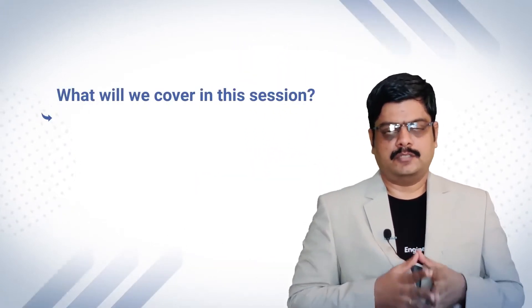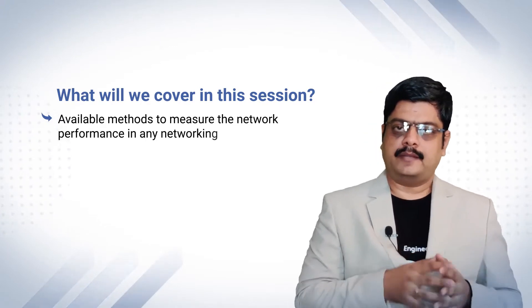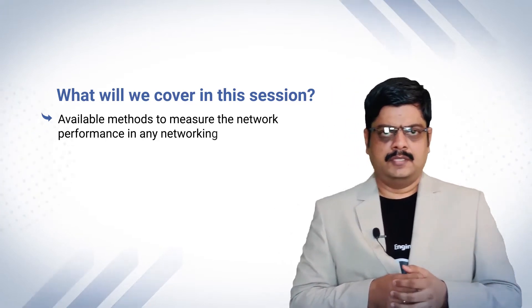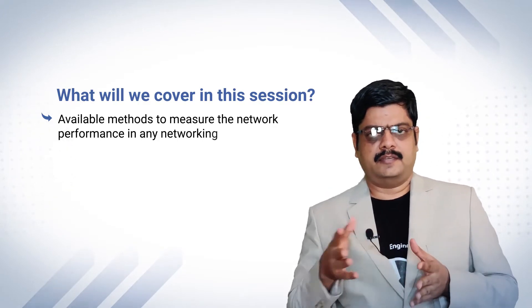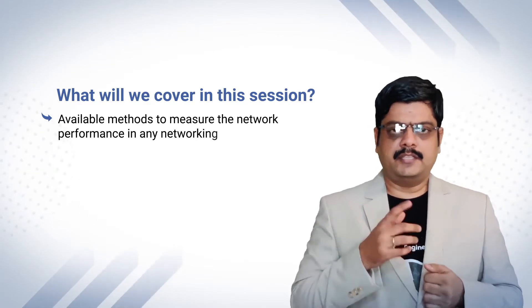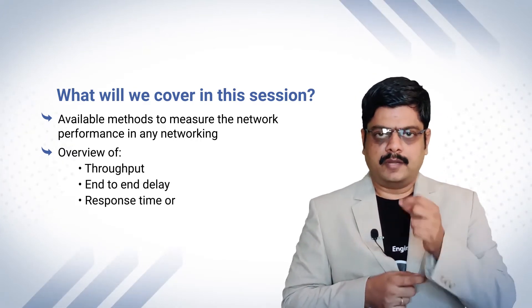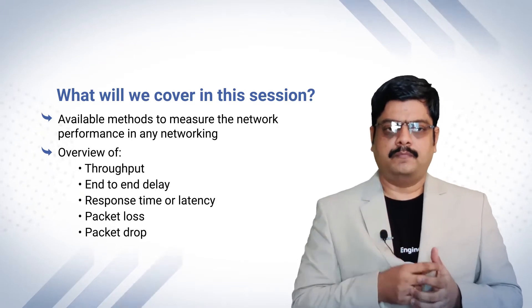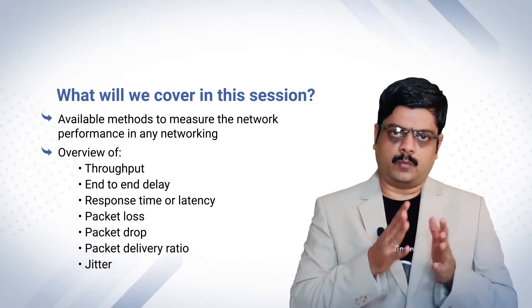Hello Runners! Welcome to the Networks Performance Matrix session. In this session, we will talk about the various network performance metrics available for any networking, called as wired or wireless networks. Generally speaking, wired or wireless networks have different metrics — wireless is slightly lesser than wired networks, and wired is superior. In this topic, we will cover throughput, end-to-end delay, response time or latency, packet loss, packet drop, and packet delivery ratio. These are the different performance metrics we can measure for wired or wireless networks.